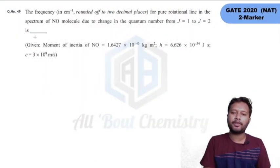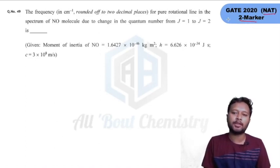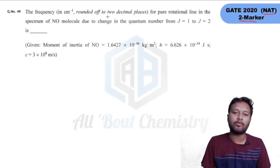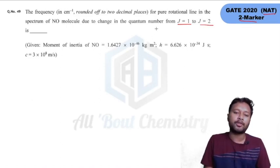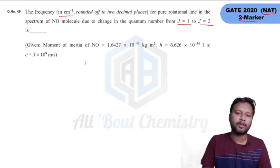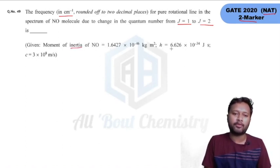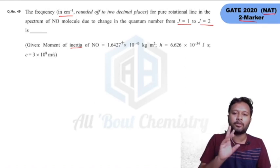The first question was asked for two marks and it was a numerical answer type question. The question asks for the frequency in centimeter inverse — rounded off to two decimal places — for the pure rotational line in the spectrum of the NO molecule during the change in quantum number from J=1 to J=2. They have given you values for moment of inertia, H, and the speed of light.